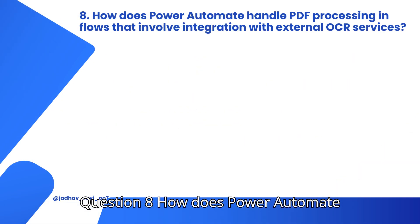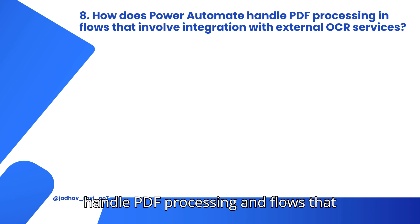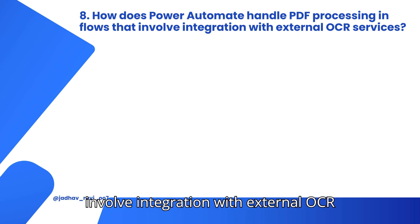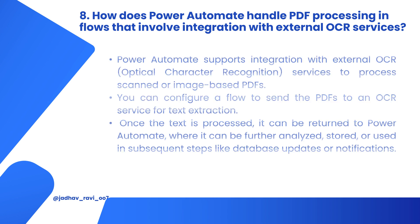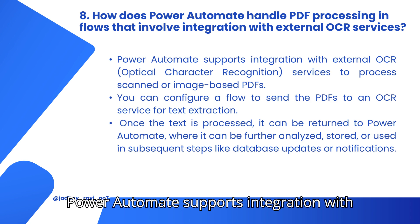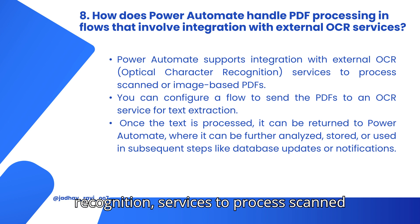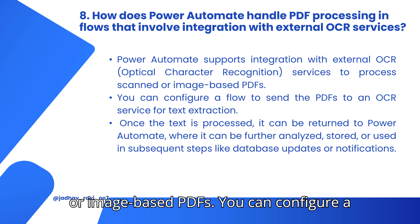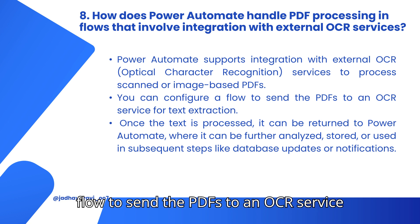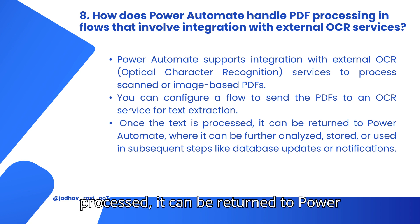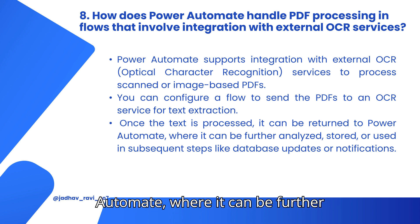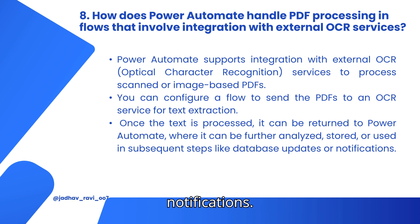Question 8: How does Power Automate handle PDF processing and flows that involve integration with external OCR services? Power Automate supports integration with external OCR (optical character recognition) services to process scanned or image-based PDFs. You can configure a flow to send the PDFs to an OCR service for text extraction. Once the text is processed, it can be returned to Power Automate where it can be further analyzed, stored, or used in subsequent steps like database updates or notifications.